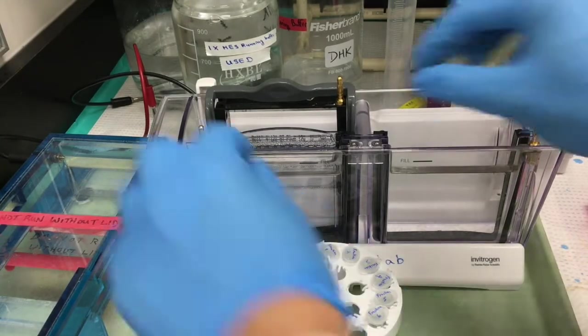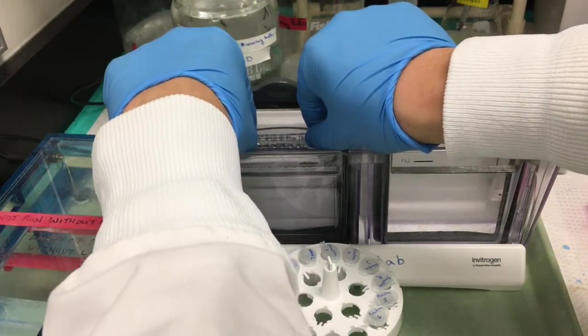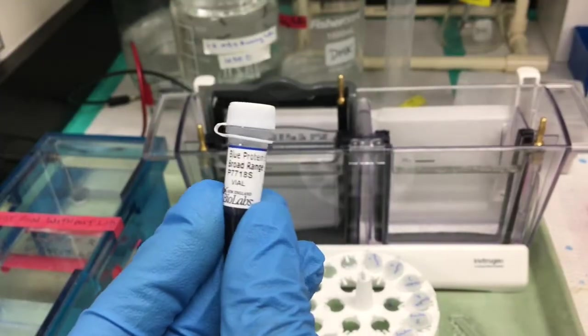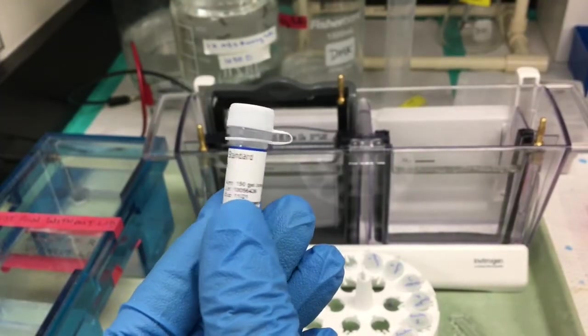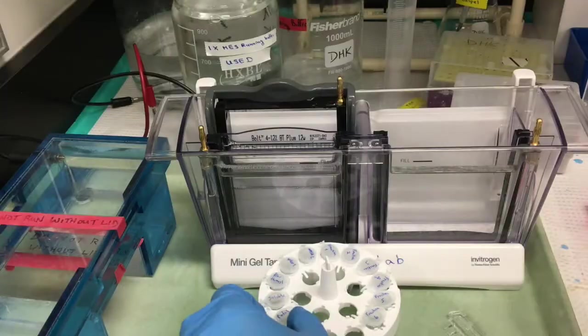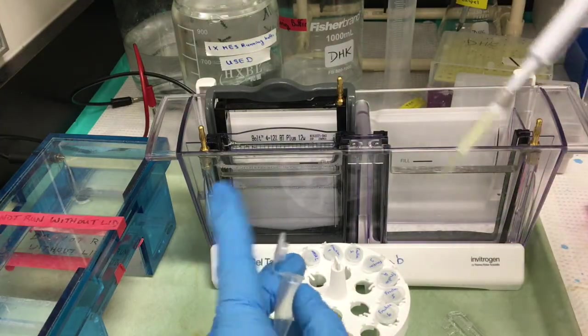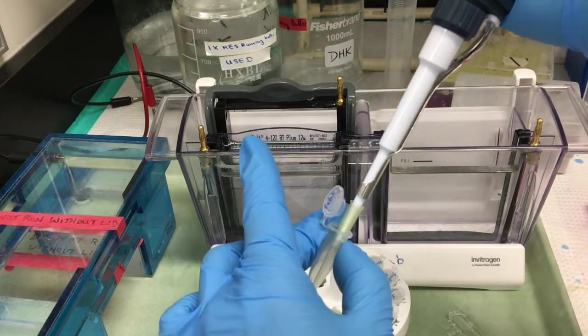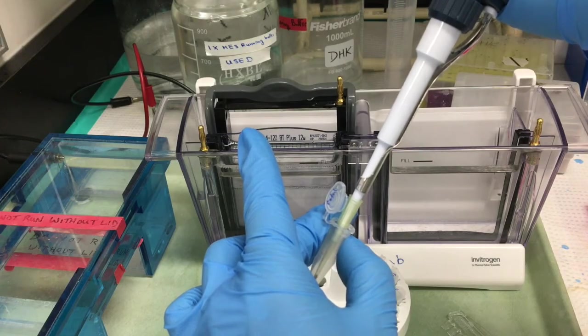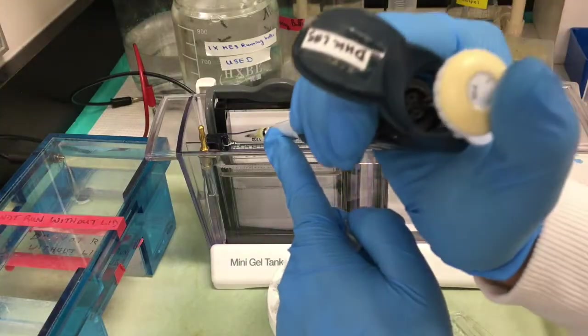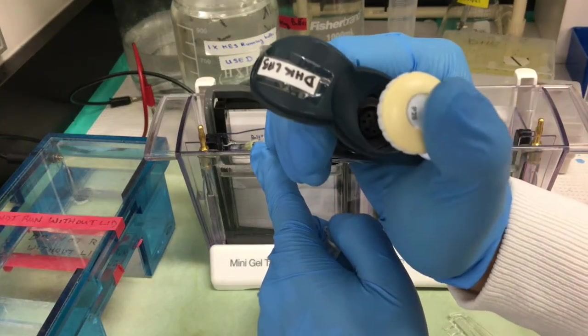I'm using a precast 4 to 12% gradient gel. Don't forget, in addition to your samples, you need to load molecular weight marker. I'm going to load my gel first with my samples from crude lysate, cleared soluble lysate, flow through, the first and second washes, then molecular weight marker, followed by the samples from my elution fractions.